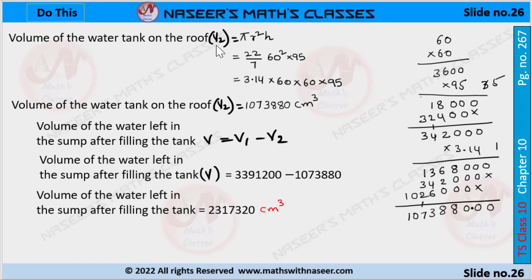Now we are going to find the volume of the water tank on the roof, that is the cylinder. Volume V2 is equal to π × r² × h. Pi value is 3.14, r value is 60, and h value is 95. 60 squared is written as 60 × 60. After multiplying these values we get 10,73,880 cubic centimeters.